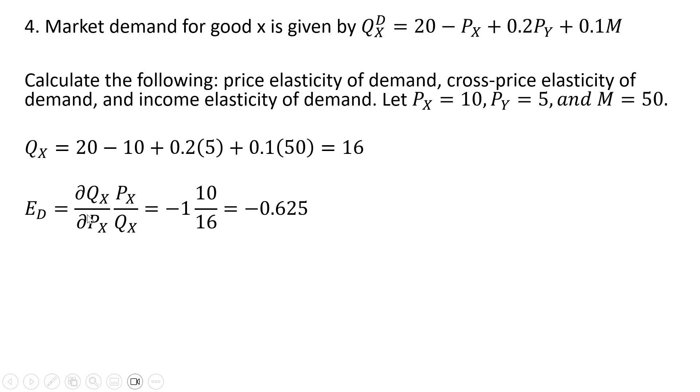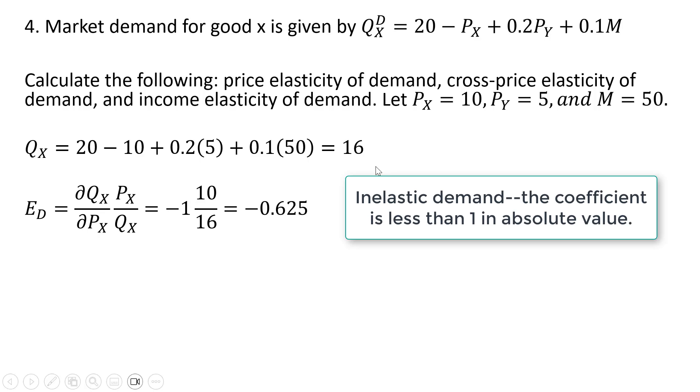To get the price elasticity of demand, we take the partial derivative of this demand equation with respect to P subscript X. We just get back the coefficient on the P subscript X term, which is minus 1. Then we're multiplying that by the price of good X, which we're told is 10, and the quantity that we just solved for, which is 16. So minus 10 divided by 16 gives us this answer.